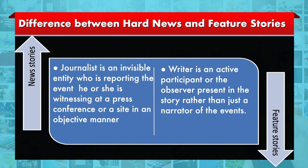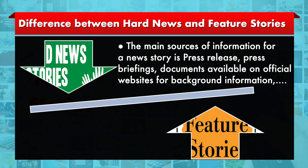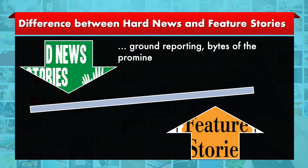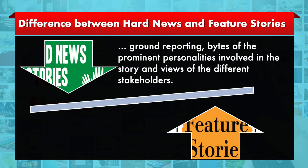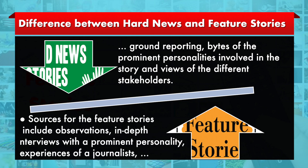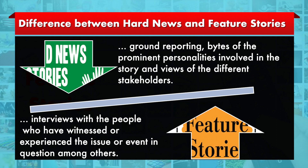There is a clear voice of the writer in feature stories, and his or her ideology, viewpoint, and personality is reflected from the work. Sources of news stories and feature stories also differ. The main sources for a news story are press releases, press briefings, documents on official websites for background information, ground reporting, and bytes from prominent personalities and different stakeholders. Sources for feature stories include observations, in-depth interviews with a prominent personality, experiences of the journalist, and interviews with people who have witnessed or experienced the issue or event.